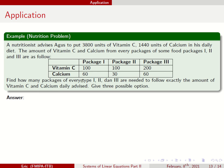Find how many packages of every type 1, 2, and 3 are needed to follow exactly the amount of vitamin C and calcium daily advised. Vitamin C should be this one and calcium should be this one. Give 3 possible options. You should have infinitely many solutions here. Let's try to formulate the problem.